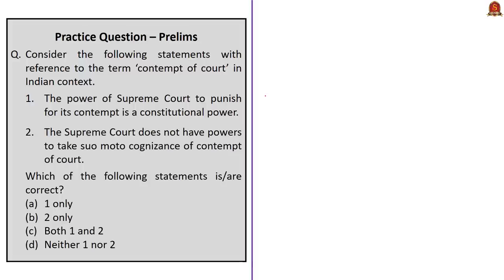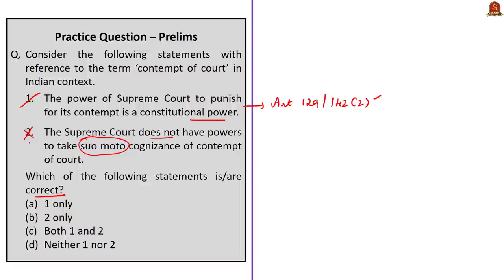Now let us move on to the practice questions discussion session. Look at this first question on contempt of court — it is a two-statement question where you need to choose correct statements. The first statement says the power of the Supreme Court to punish for its contempt is a constitutional power, as per Articles 129 read along with Article 142(2) — this is a correct statement. The second statement says the Supreme Court does not have powers to take suo motu cognizance of contempt of court — this is incorrect because as per the recent judgment, the Supreme Court said it does have such powers. So the correct answer is option A — 1 only.